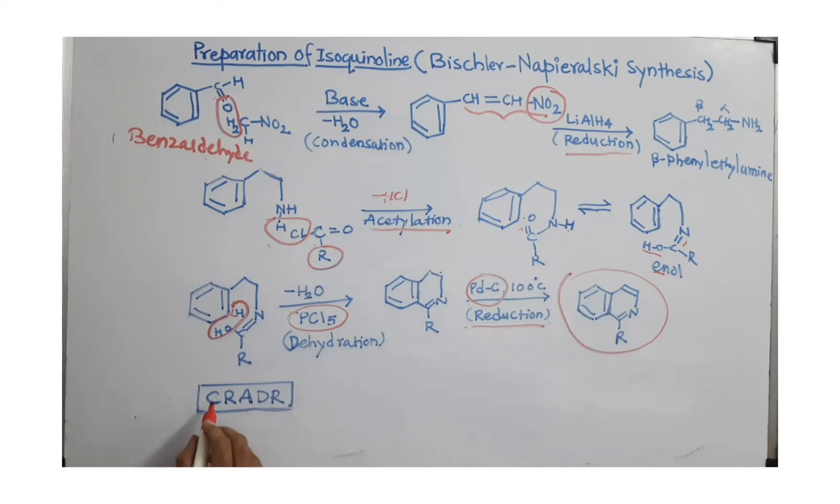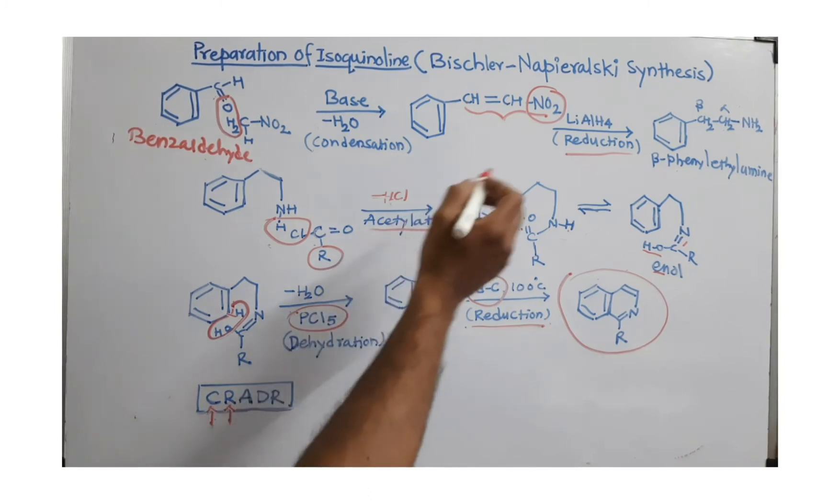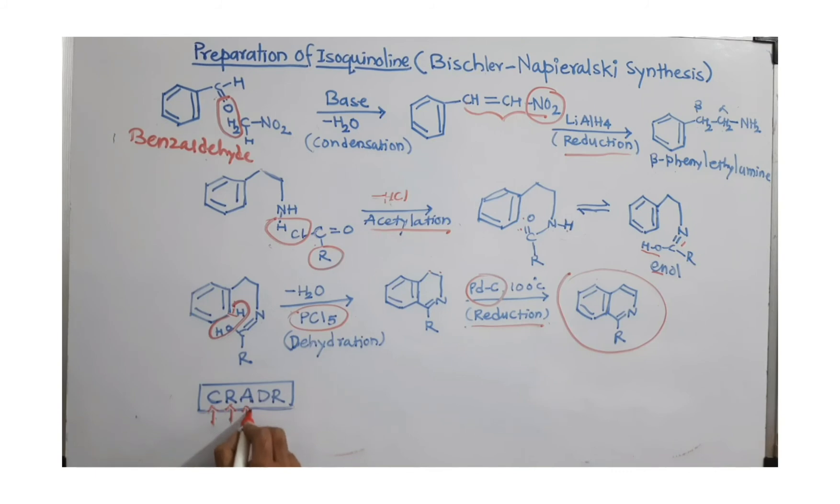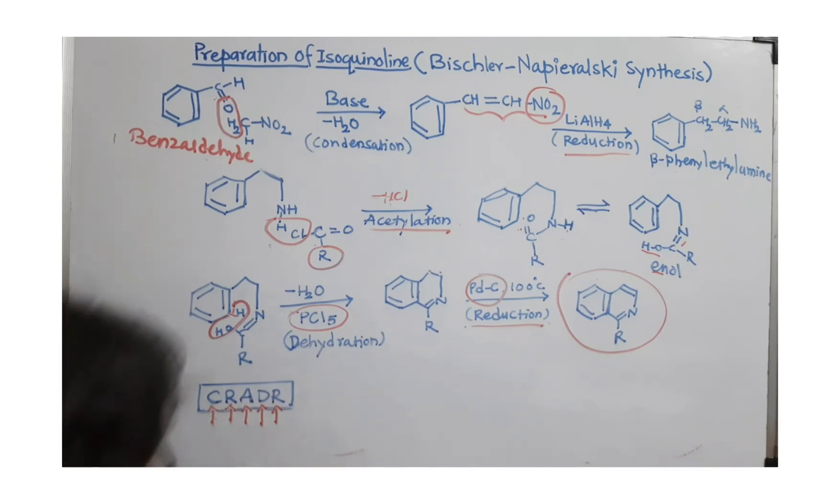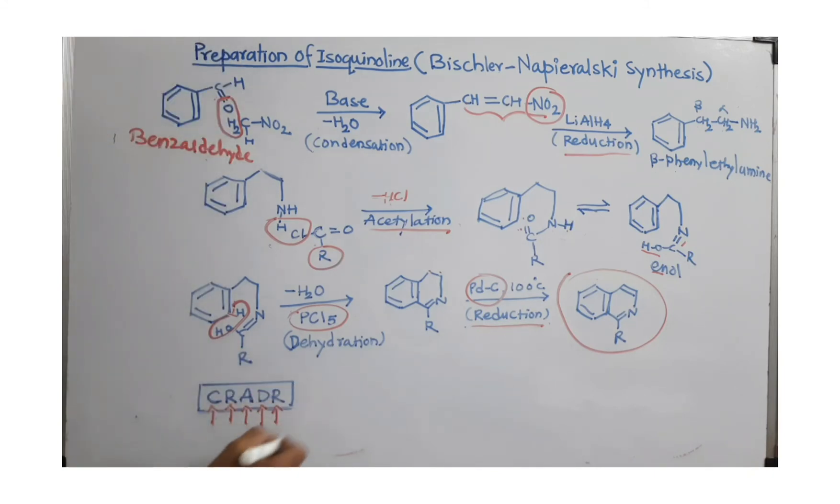And we get here isoquinoline. So, for this synthesis, we are using CRADR. C means condensation. R means reduction by using lithium-aluminium hydride. A means acetylation. D means dehydration by using phosphorus pentachloride. And finally, R means reduction by using another reagent that is Pd/C. And you have to remember these multiple steps by using CRADR while discussing preparation of isoquinoline.